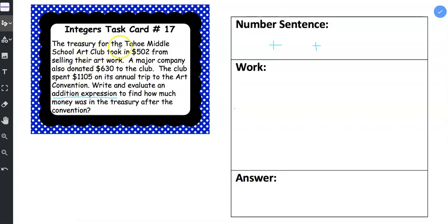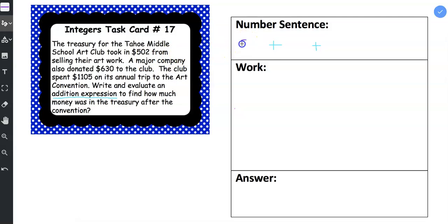So it first says that the treasury for the Tahoe Middle School Art Club took in $502 from selling their artwork. Took in, that means they made $502 so that's a positive.